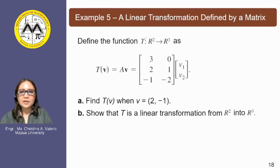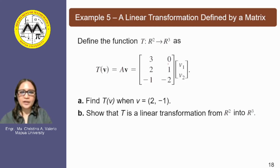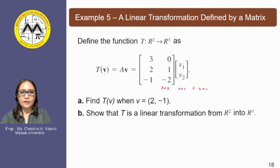In example number five, we have a linear transformation defined by a matrix. Define the function T which maps R² into R³ as T of vector v equivalent to A times v, where A is a 3×2 matrix with elements 3, 0, 2, 1, −1, −2, and v is a 2×1 vector. We expect the product A times v to be a column vector of size 3×1, so the image of vector v is a 3-component vector.